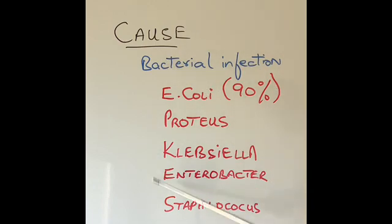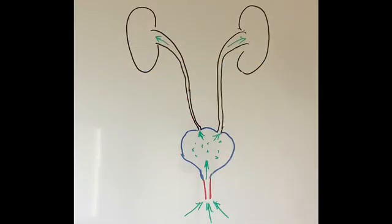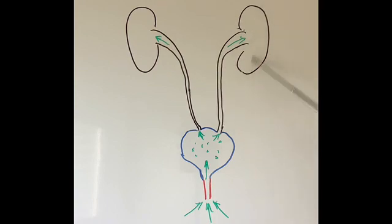How do these bacteria get to our kidneys? As I explained in my previous video, this is what the urinary tract looks like. So our kidneys, left and right kidney. The two tubes that come out of the kidney called the ureters come and join our urinary bladder where the urine is stored before we pass the urine from our urethra. So this is the tube which leads from the bladder and passes the urine out.